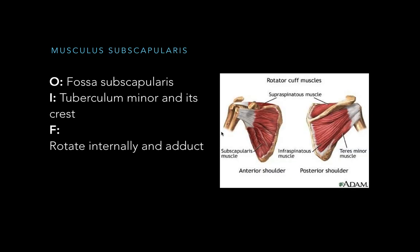The last muscle is musculus subscapularis, located on the front side. It originates at the fossa subscapularis and inserts at the tuberculum minor and its crest. When this muscle contracts, it rotates the arm internally and adducts the arm, pulling it to the midline. That covers all the muscles for this video, and I hope it was helpful.